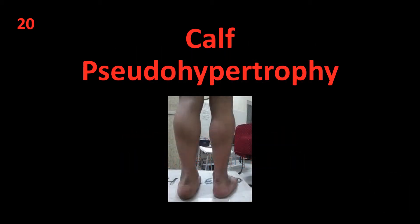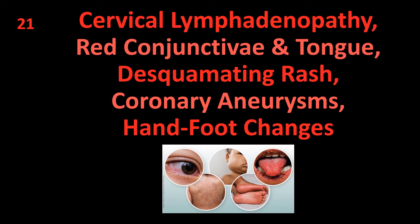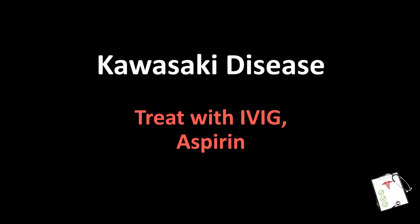Number 20: Calf pseudohypertrophy. Answer: Muscular dystrophy — most commonly Duchenne, due to X-linked recessive frameshift mutation in the dystrophin gene. Number 21: Cervical lymphadenopathy, red conjunctiva and tongue, desquamating rash, coronary aneurysms, hand-foot changes. Answer: Kawasaki disease — treat with IVIG and aspirin.